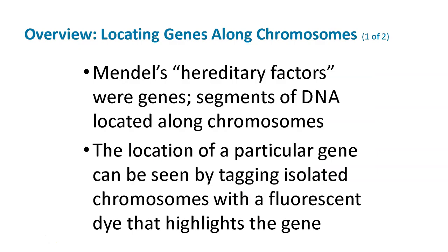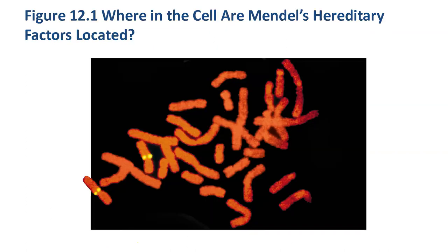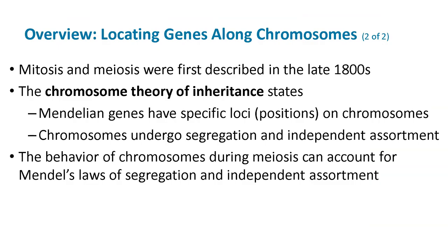Mendel's heredity factors were genes, which are segments of DNA. The location of a particular gene can be seen by tagging it — fluorescently labeled, for example. Mitosis and meiosis were described in the late 1800s, so Mendel had no idea about this stuff. He knew that there were particles traveling, kept meticulous data, and was good in math. Mendelian genes have specific locations, and chromosomes undergo segregation and independent assortment during meiosis.